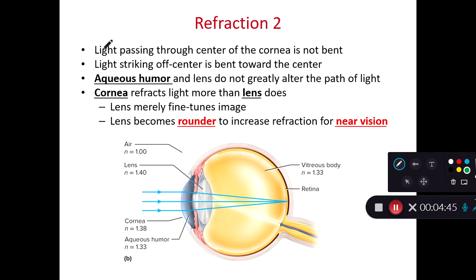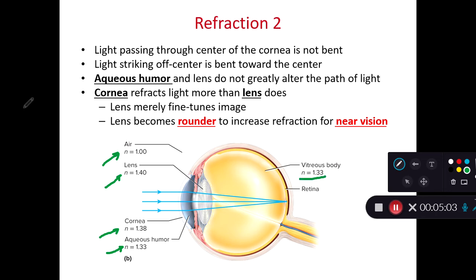Now let's look at the refractive indices of the optical components of our eyes. Air has a refractive index of 1 by definition; our lens is 1.4; the cornea is 1.38; the aqueous humor is 1.33; and the vitreous body is also 1.33. The aqueous humor and lens are designed in such a way that they have almost no impact on the path of light.